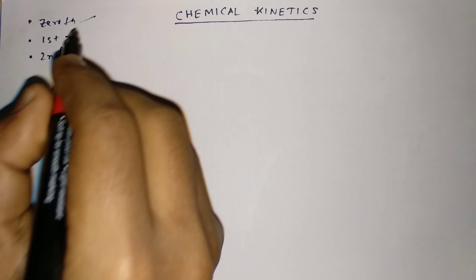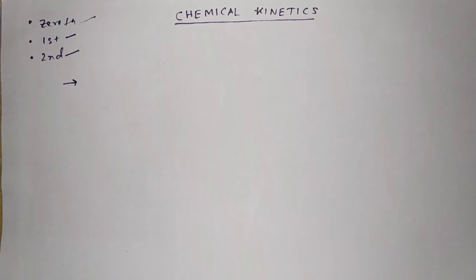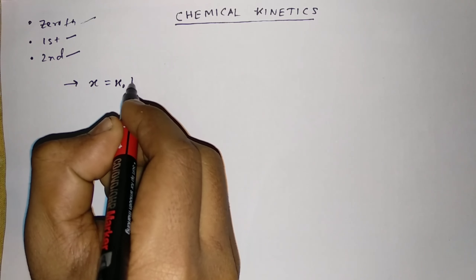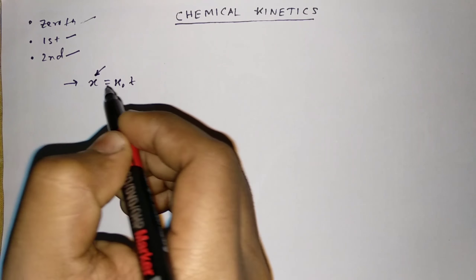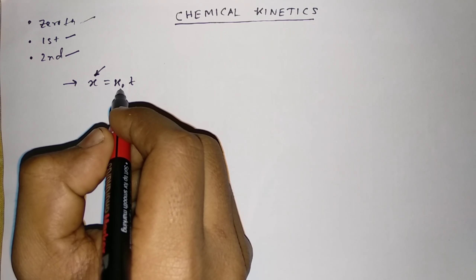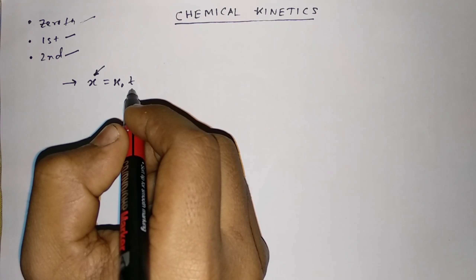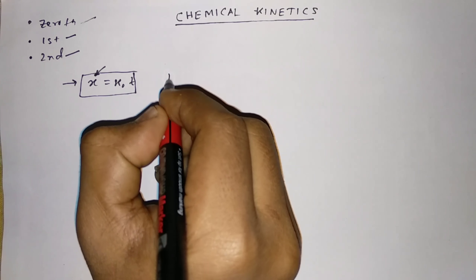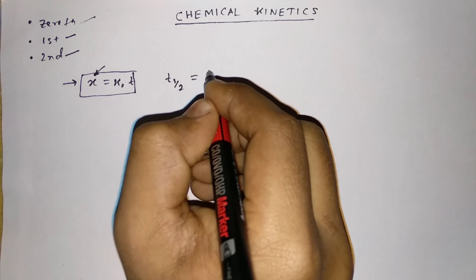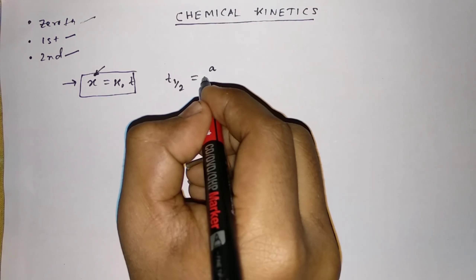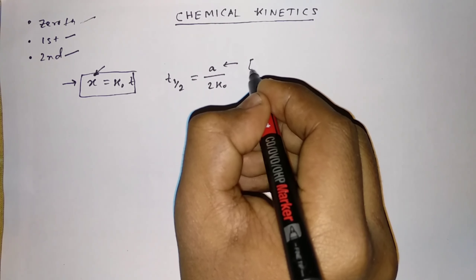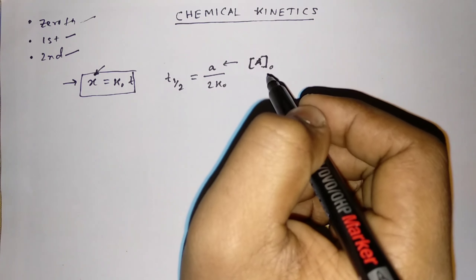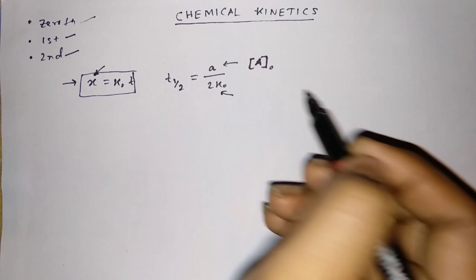For the 0th order reaction, the rate law you have to remember is: x = k₀t, where x is the concentration of product after time t, k₀ is the rate constant for 0th order reaction, and t is the time. You also have to remember the half-life equation: t½ = A / 2k₀, where A is the initial concentration of the reactant.